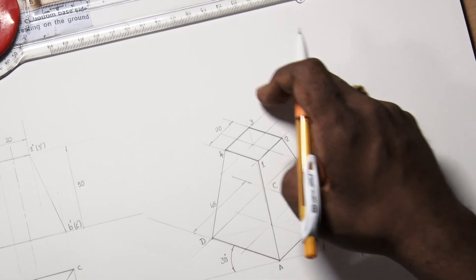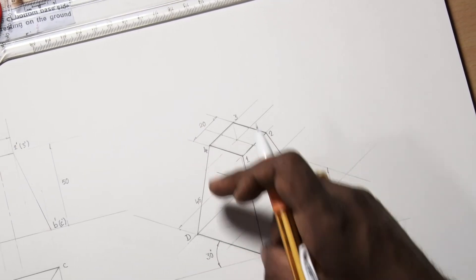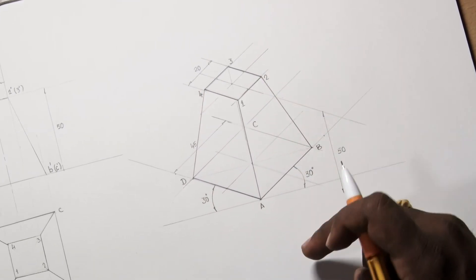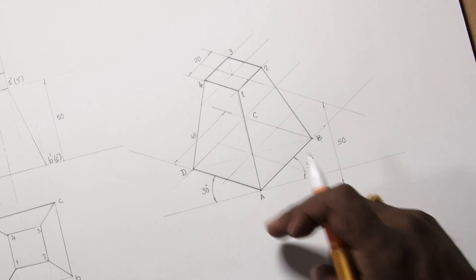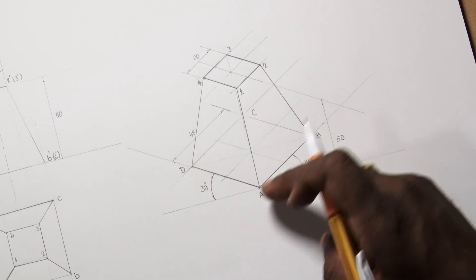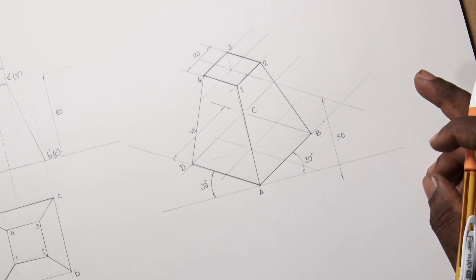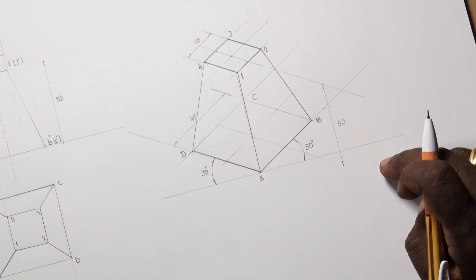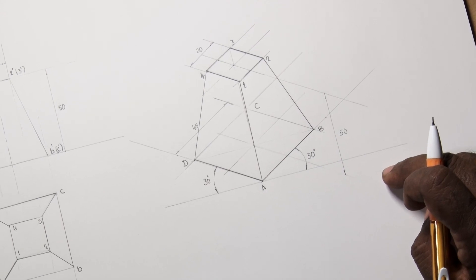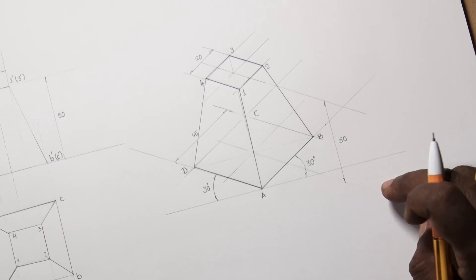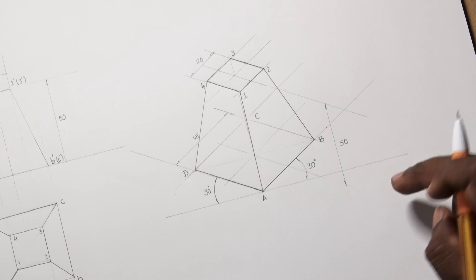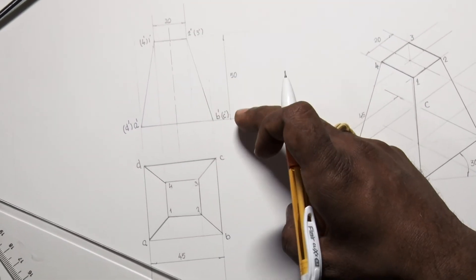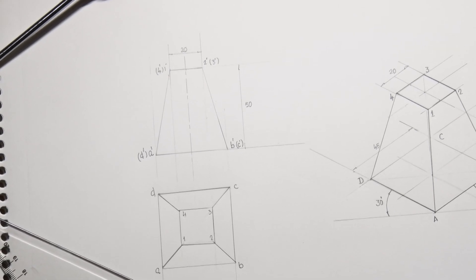We know 1, 2, 3, 4 is completely visible and we draw the outer edges. So we connect 2 and B, connect 4 and D, then A, D, A, B. Finally, 1A is also visible. So this sketch is the isometric view of the frustum of a square pyramid of base side 45mm, top face 20mm, and height 50mm.